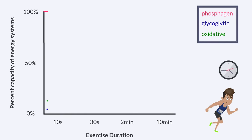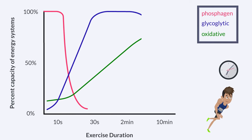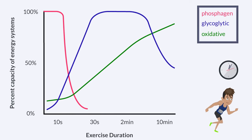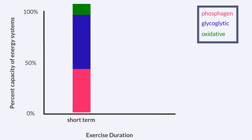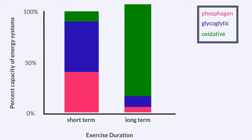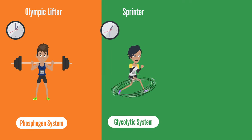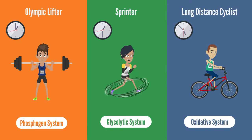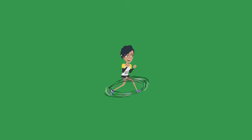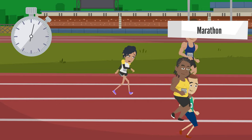It is important to note that the contribution of energy from each system progresses along a continuum. For short-term exercise, the anaerobic systems are the primary contributors, with the aerobic system supplying the remaining energy, and vice versa for long-duration exercise. Athletes can also train to maximise specific energy systems. This explains why a world-record sprinter does not necessarily excel in distance running.